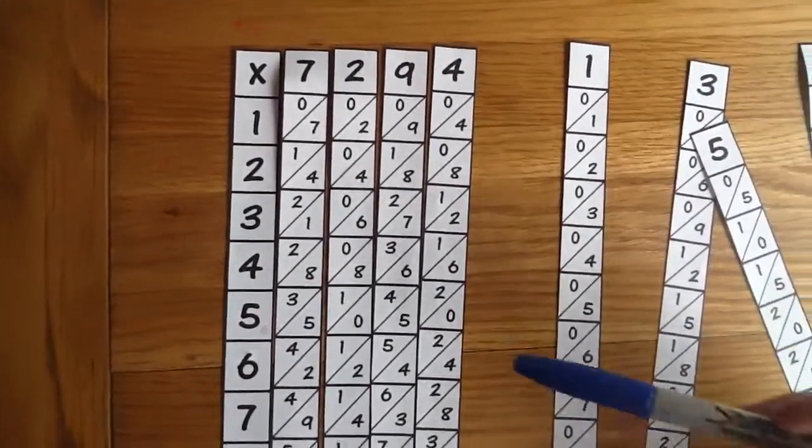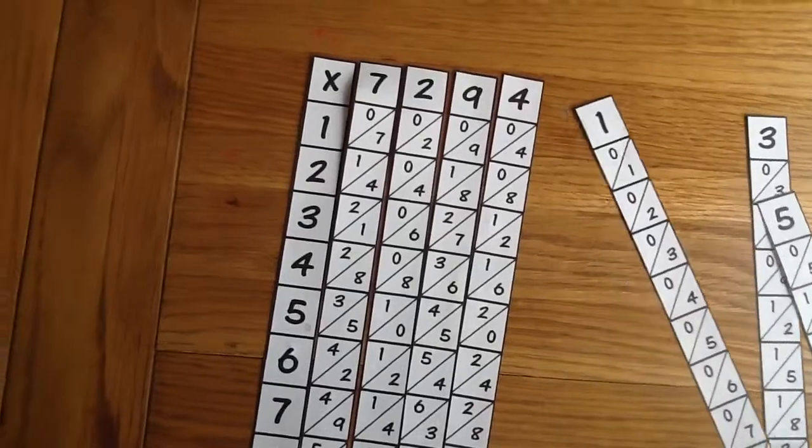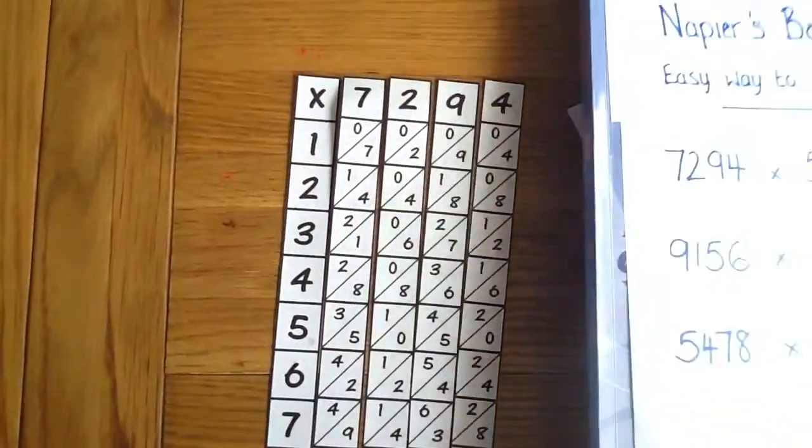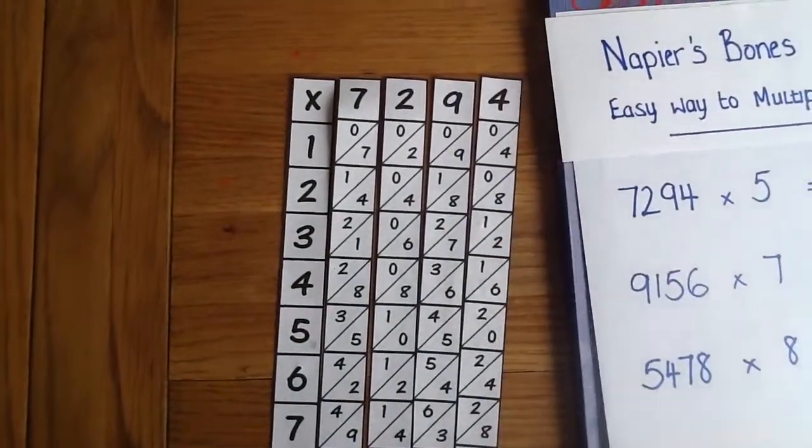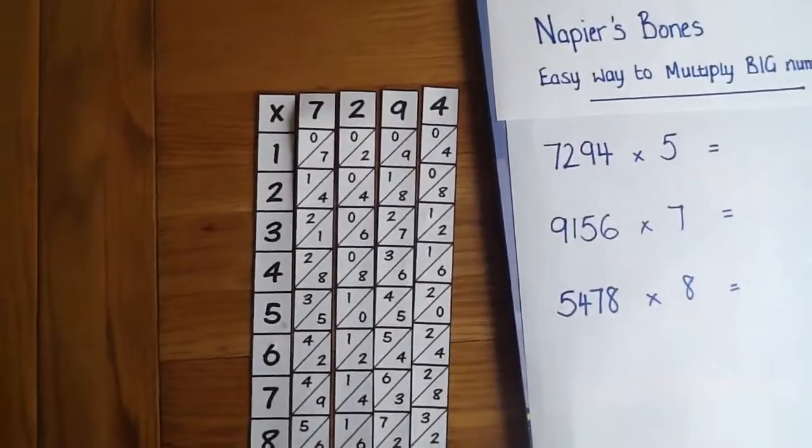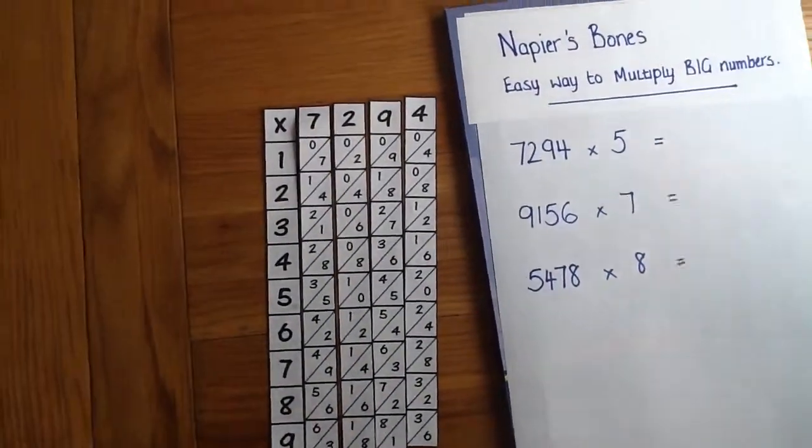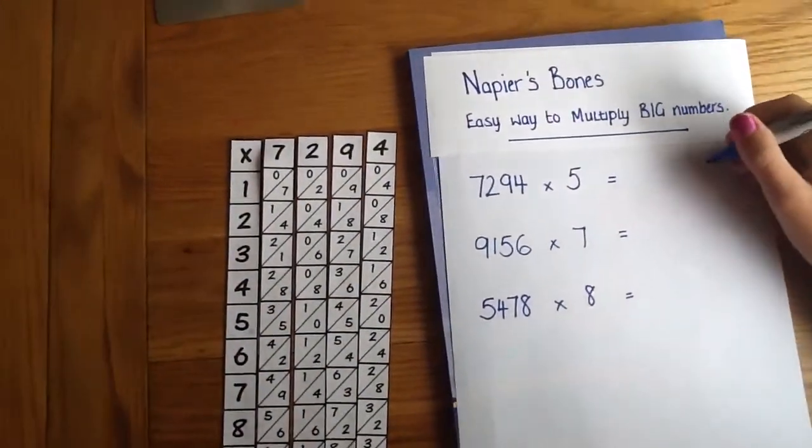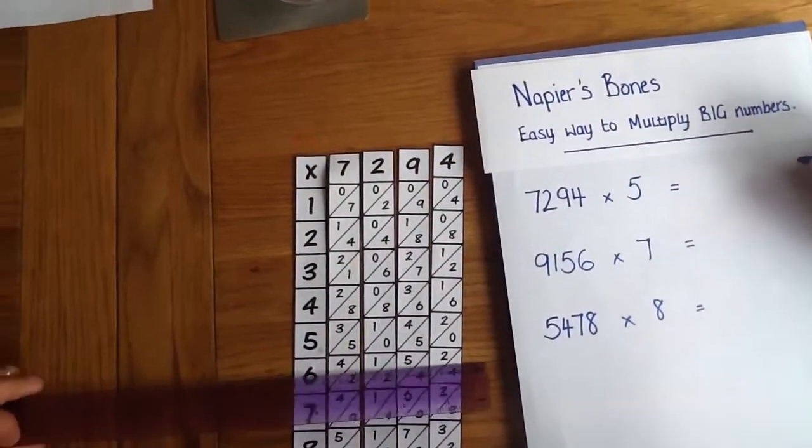If we move the answer sheet over so you can see what Cyan is doing. Okay so 7, 2, 9, 4 times 5. So the answer on the end would be a 0.